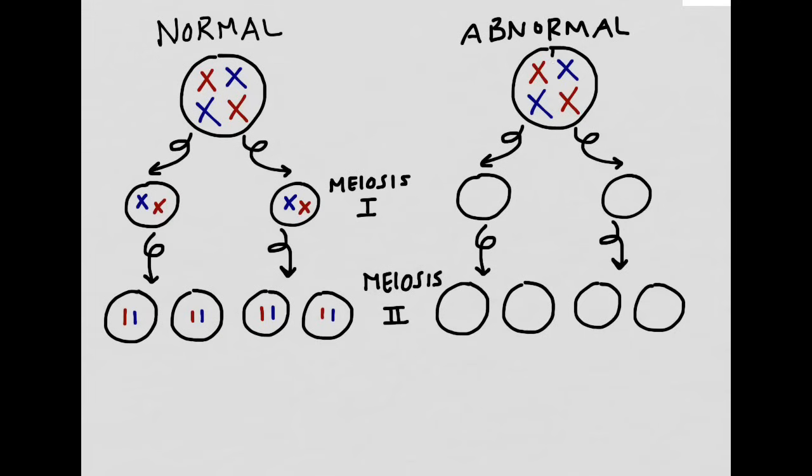Normally, half of the chromosomes wind up on one side and half of them wind up on the other side. However, sometimes this doesn't happen, and we wind up with too many chromosomes on one side and too few on the other side. So what if the cell split like this instead?